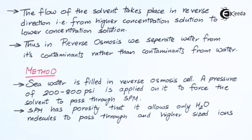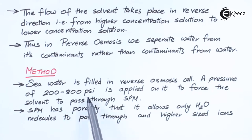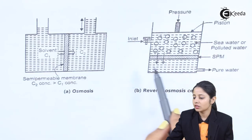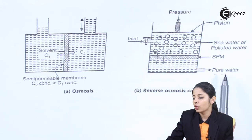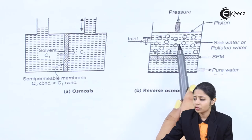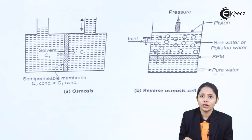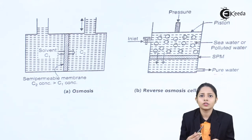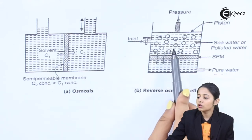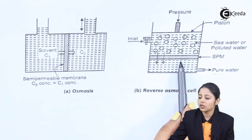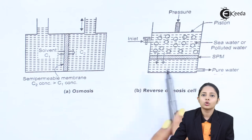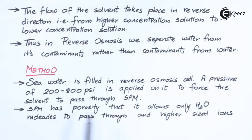Let us see the actual method by which it works. Sea water is filled in a reverse osmosis cell. A pressure of around 200 to 800 psi is applied on it to force the solvent to pass through the SPM. In the diagram, we have a reverse osmosis tank with an outlet for pure water. Sea water is on one side, pressure of 200 to 800 psi is applied — slightly higher than the osmotic pressure — and because of that, reverse osmosis starts. All the solvent particles pass through the semi-permeable membrane and come out on the lower concentration side as pure water. The SPM has a porosity that allows only H₂O molecules to pass through it.